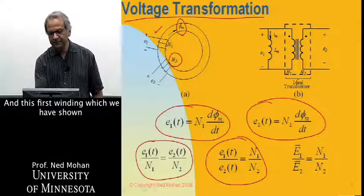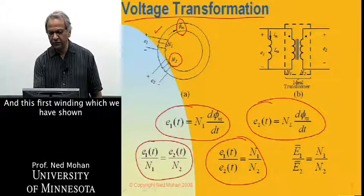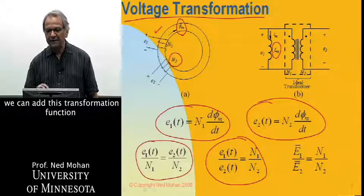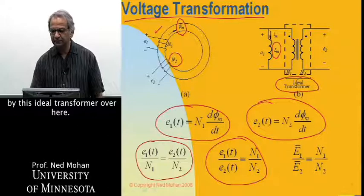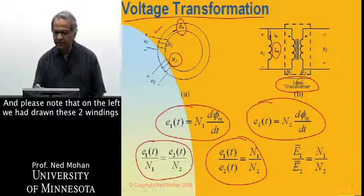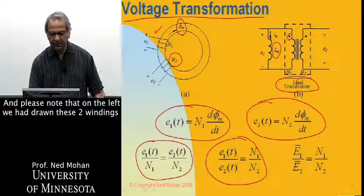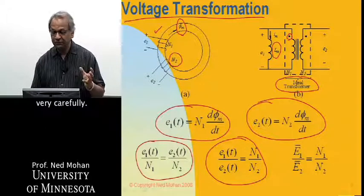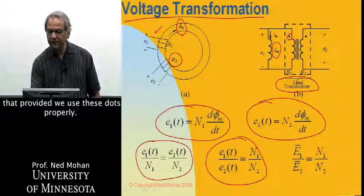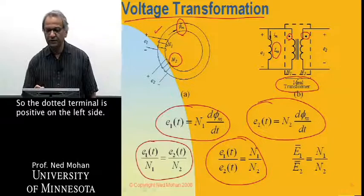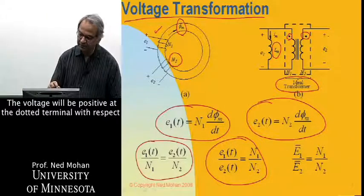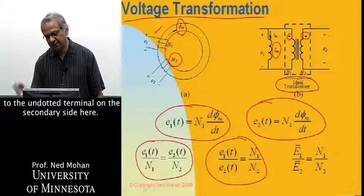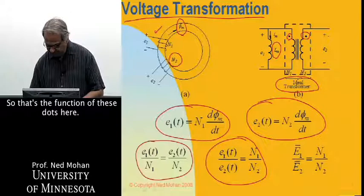This first winding, which we had shown by the magnetizing inductance Lm, can have this transformation function added by an ideal transformer with turns N1 and N2. Please note that we had drawn these two windings very carefully on the left, but we don't have to do that provided we use these dots properly. When the dotted terminal is positive on the left side, the voltage will also be positive at the dotted terminal with respect to the undotted terminal on the secondary side — so that's the function of these dots.